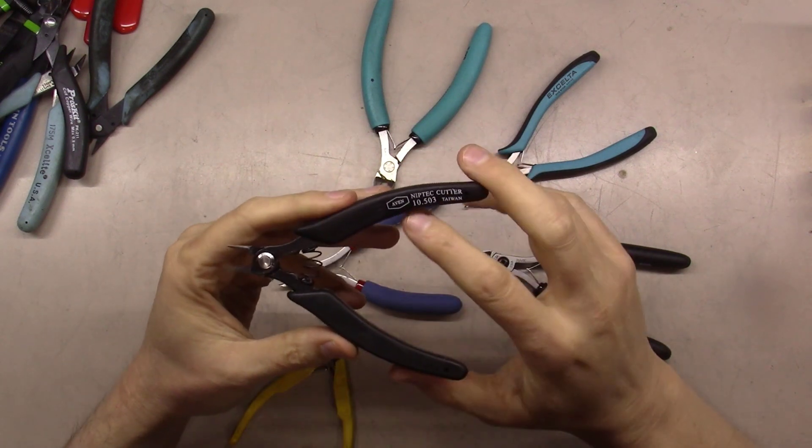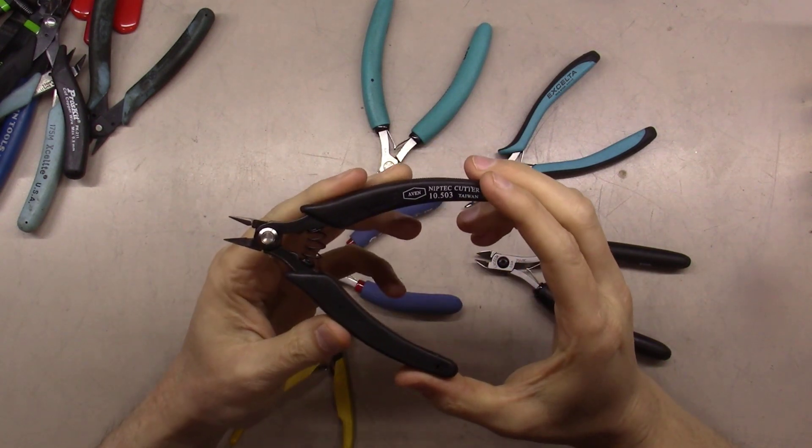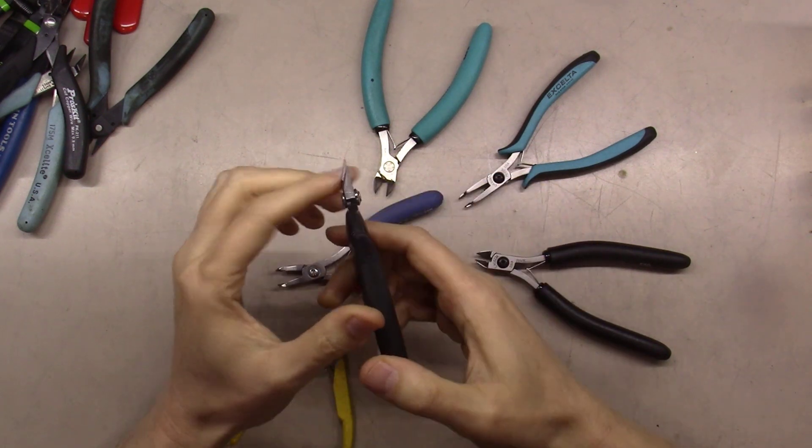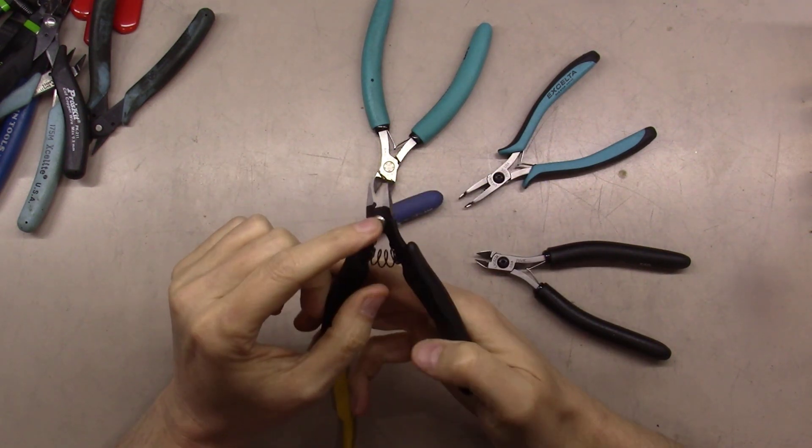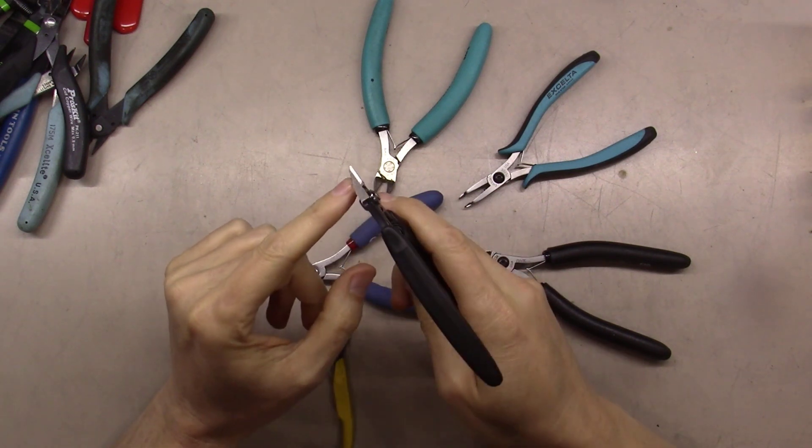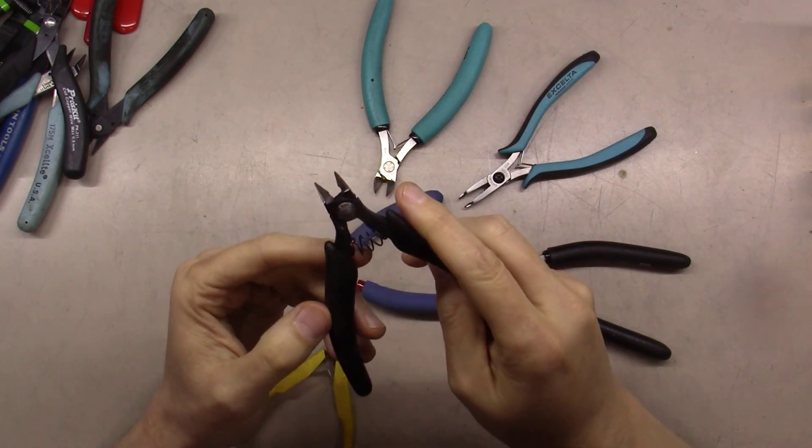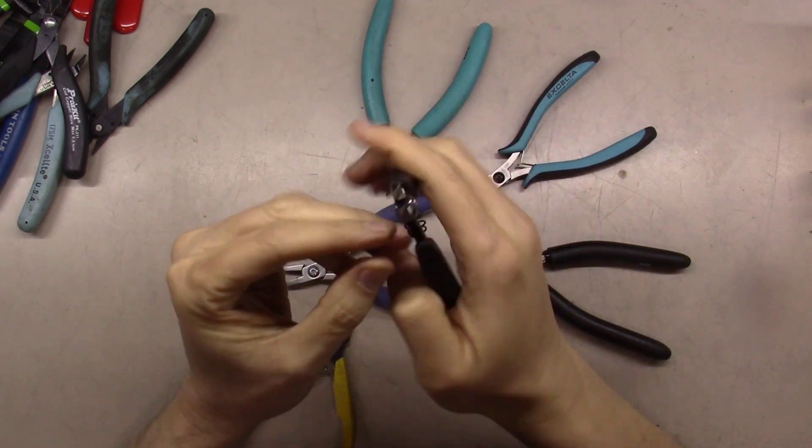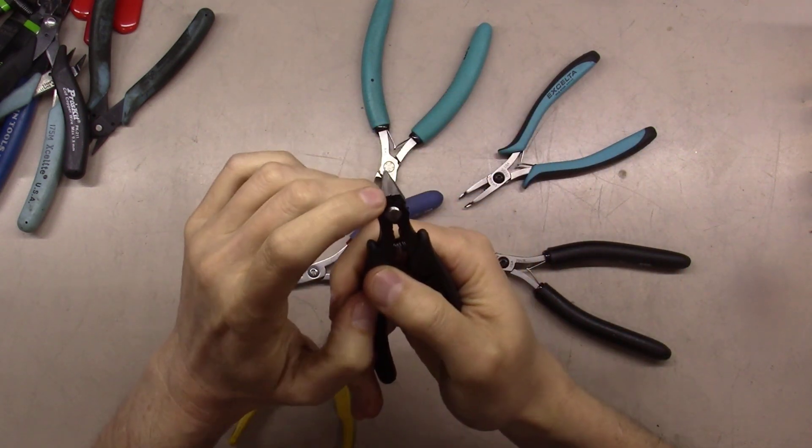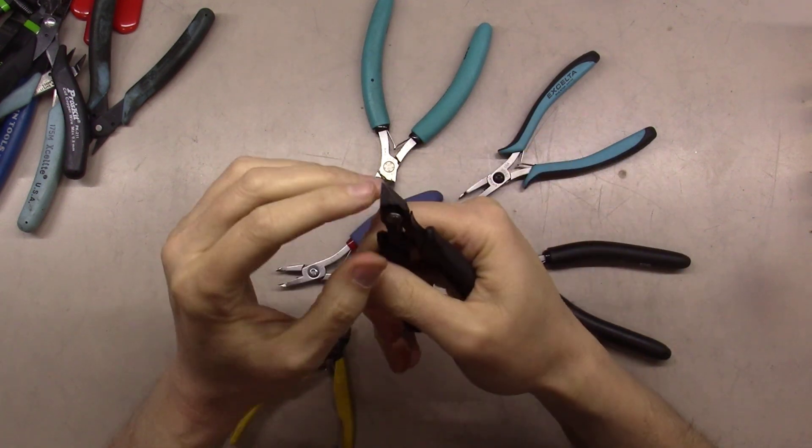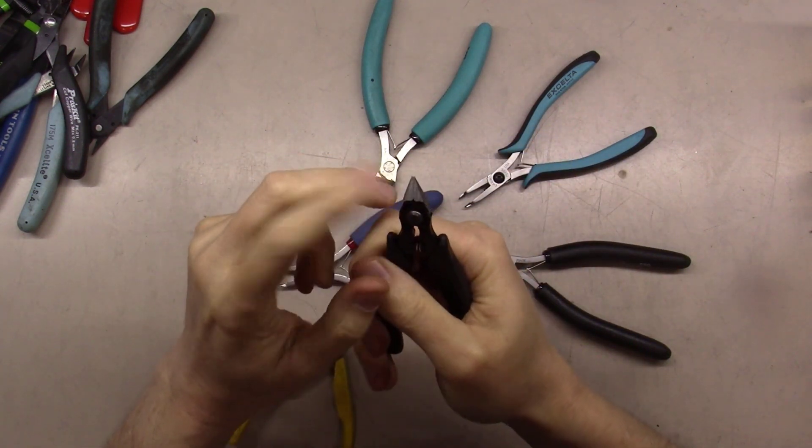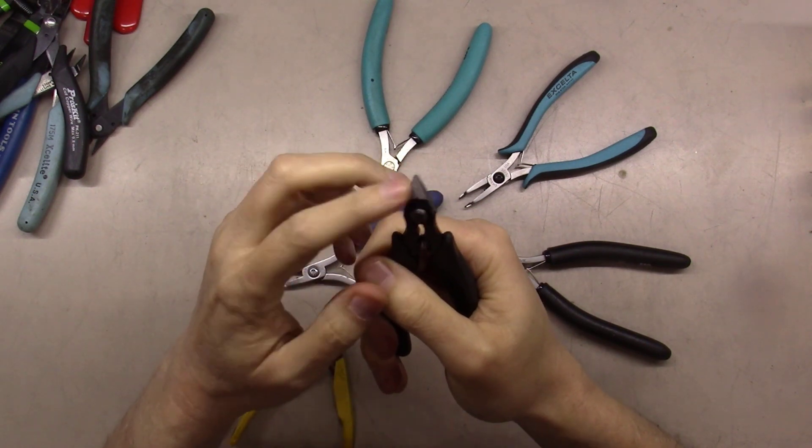This is an Aven Nip-Tech cutter from Taiwan. Nice spring on them. Even though these are kind of a stamped steel, they're thicker and they're kind of ground down so you got some width to them. There's still again a pressed rivet here and a spring. I imagine these would do good for a while. At some point though, because they're not a hardened metal, they're kind of soft, you'll end up with some divots here.